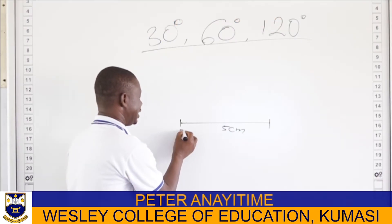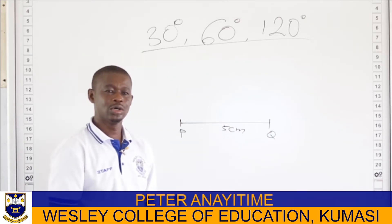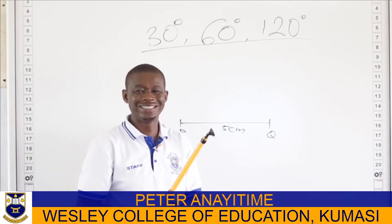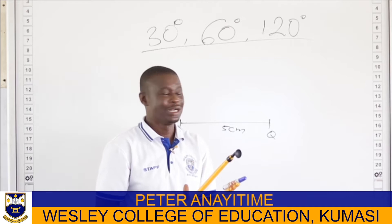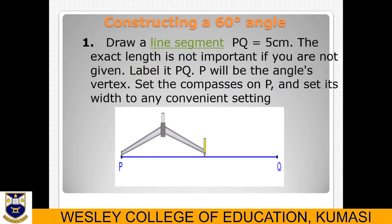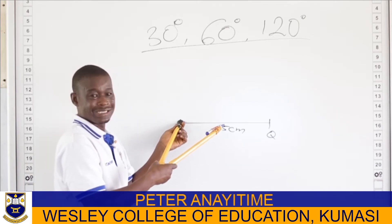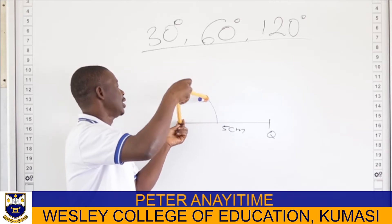Let me call the endpoints P and Q. I want to construct 60 degrees at point P. I'll open my compass at a reasonable arm length, put it on point P, then draw an arc — in fact, a very big arc.